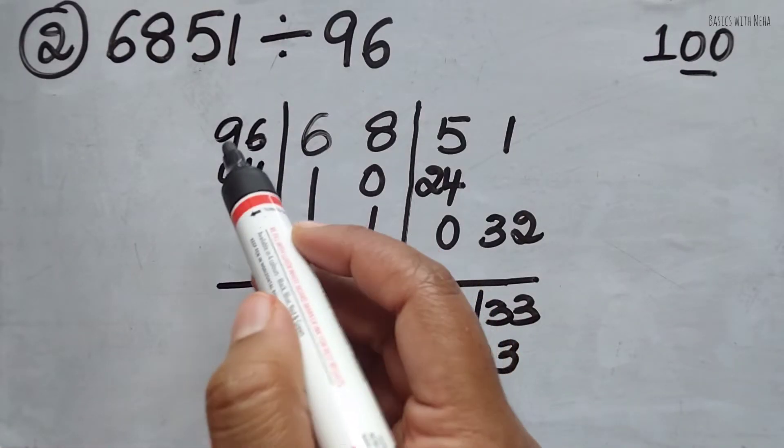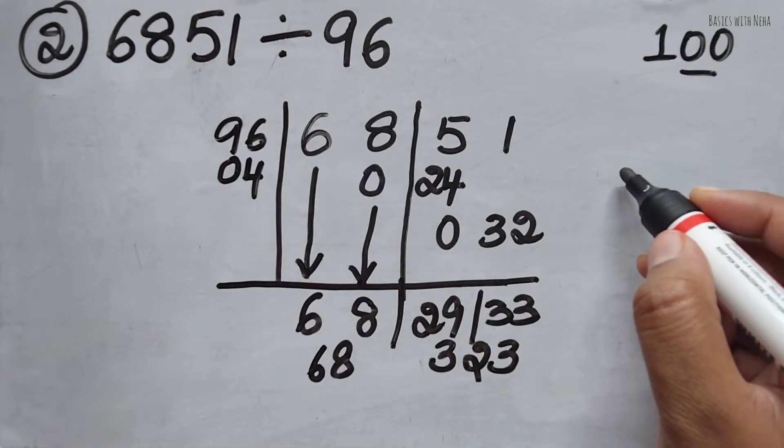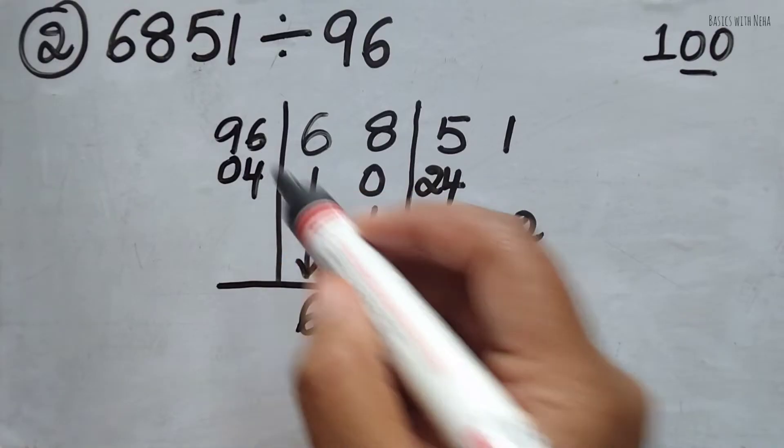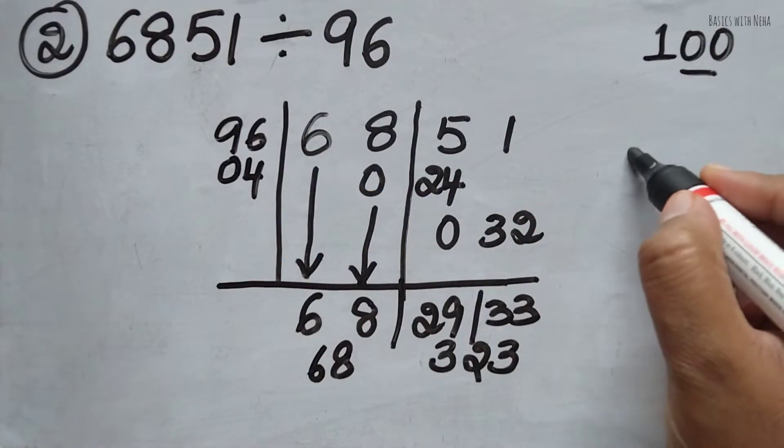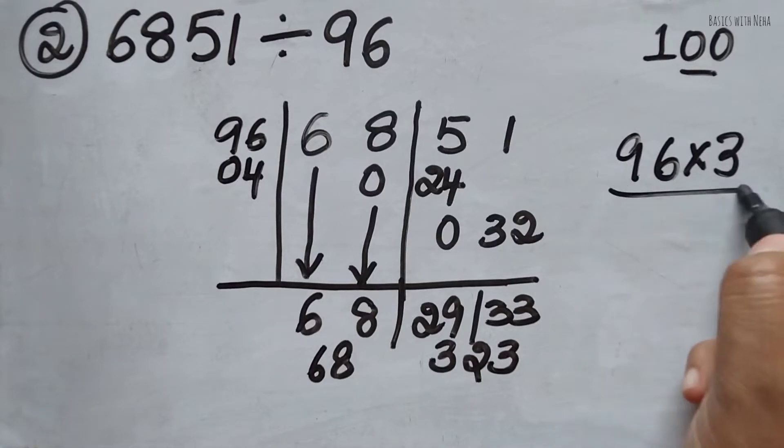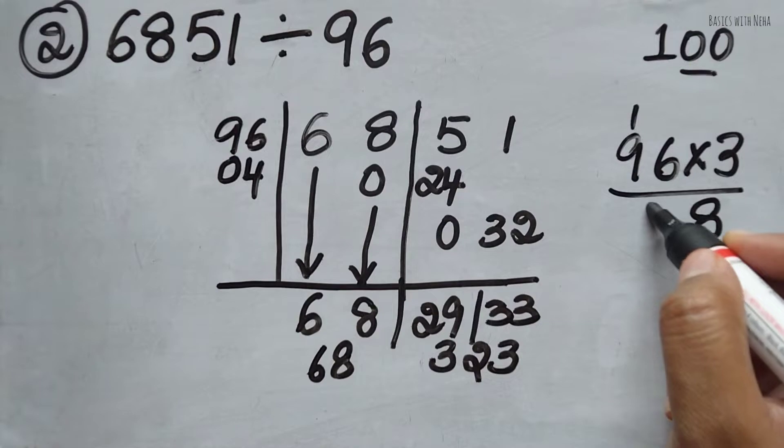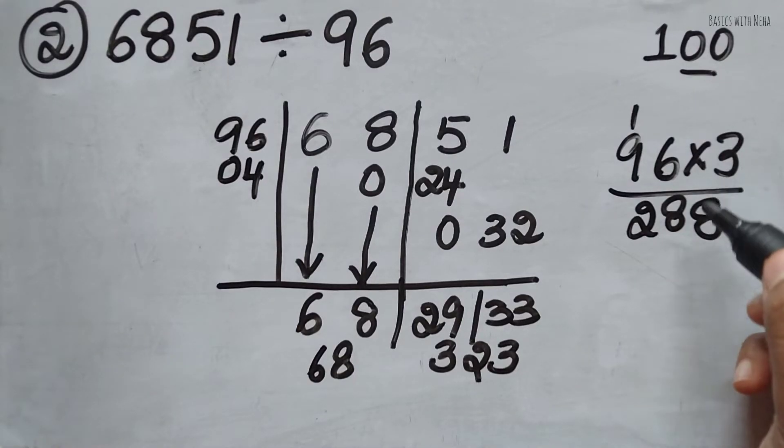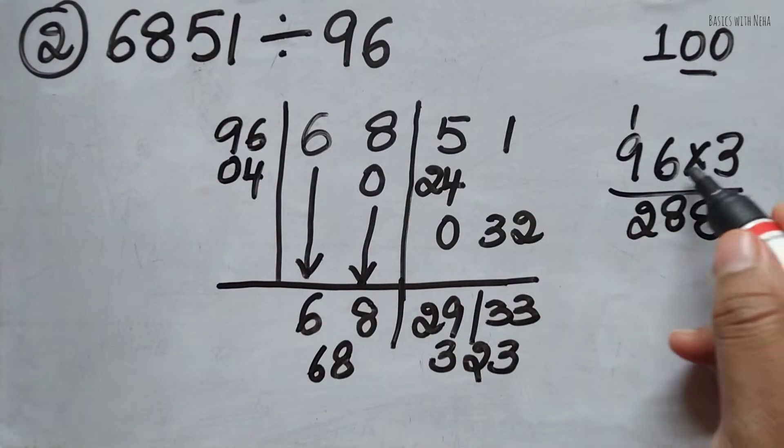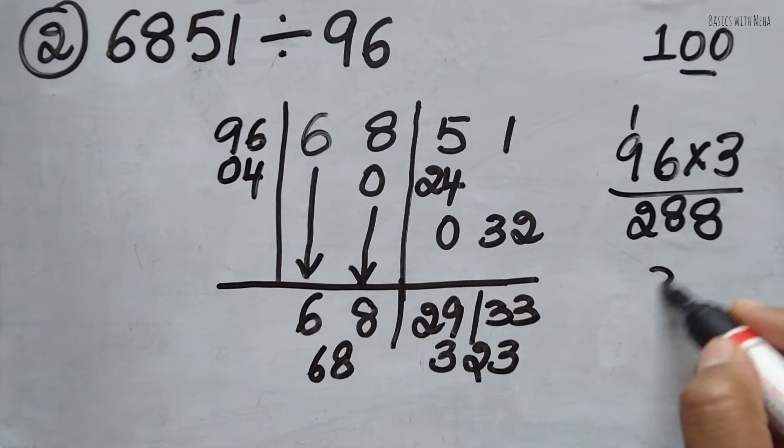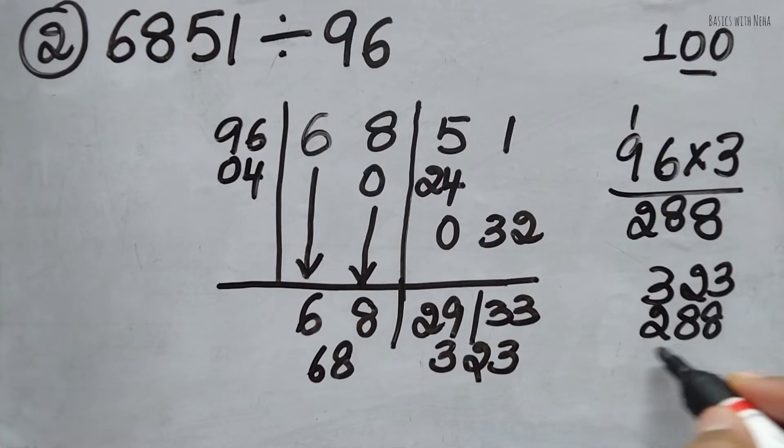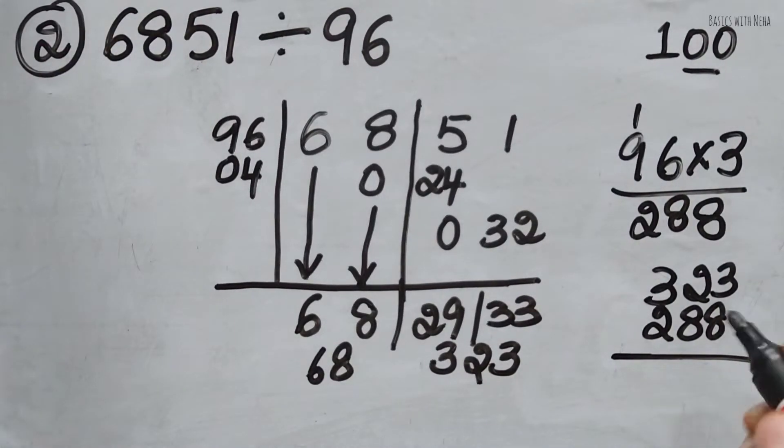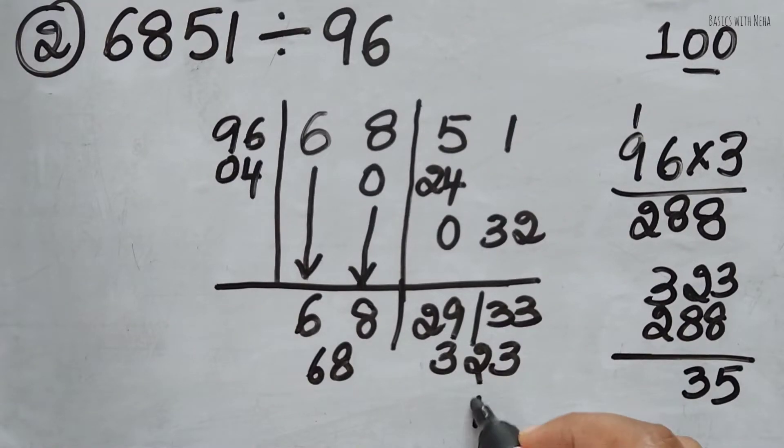Since the remainder is more than the divisor 96, I can just check how many times of 96 is 323 or lesser than that. So if I do 96 into 3 times, 6 threes are 18, 9 threes are 27, plus 1 is 28. So if I do it 4 times, 4, 6 are 24, 9 fours are 36, 37, 38. So it will be 3, 80, 3, 84, which is much more. So I can just take it as 96 into 3 times. So it is 323 minus 288. 5, 6 or 9 is 3. So it will be 35. So I can take the remainder as 35.